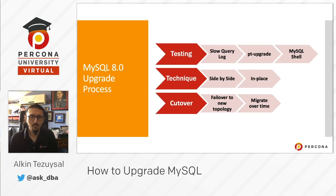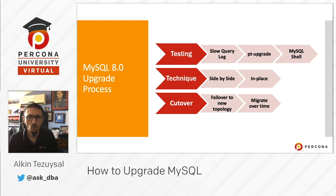In MySQL 8, the process is similar: you would actually set up testing, choose a technique to upgrade, and then plan for your cutover. In the testing phase, we recommend capturing some query logs, running the PT upgrade tool — which is part of Percona Toolkit — and then utilizing MySQL Shell. The technique could be either side by side or in place. Cutover planning should be carefully planned, and failover to a new topology is one option, or migrating over time for no-downtime upgrades.